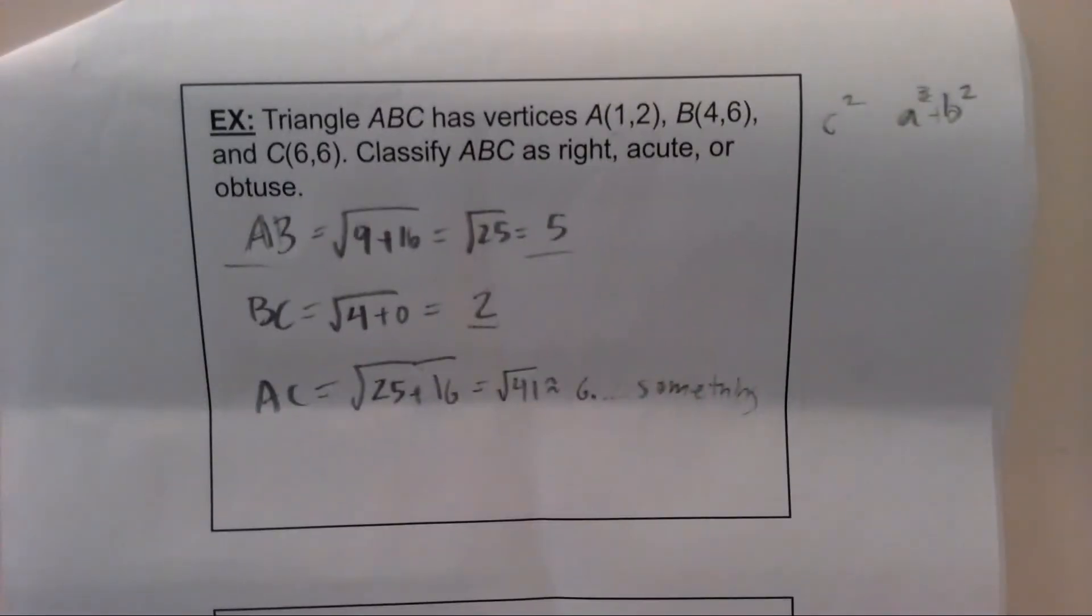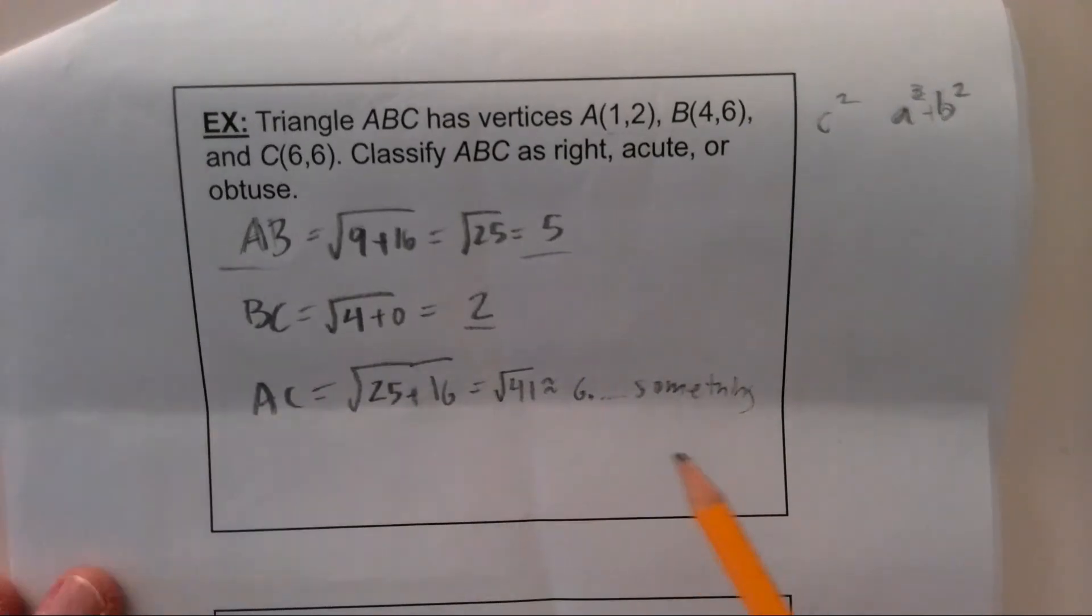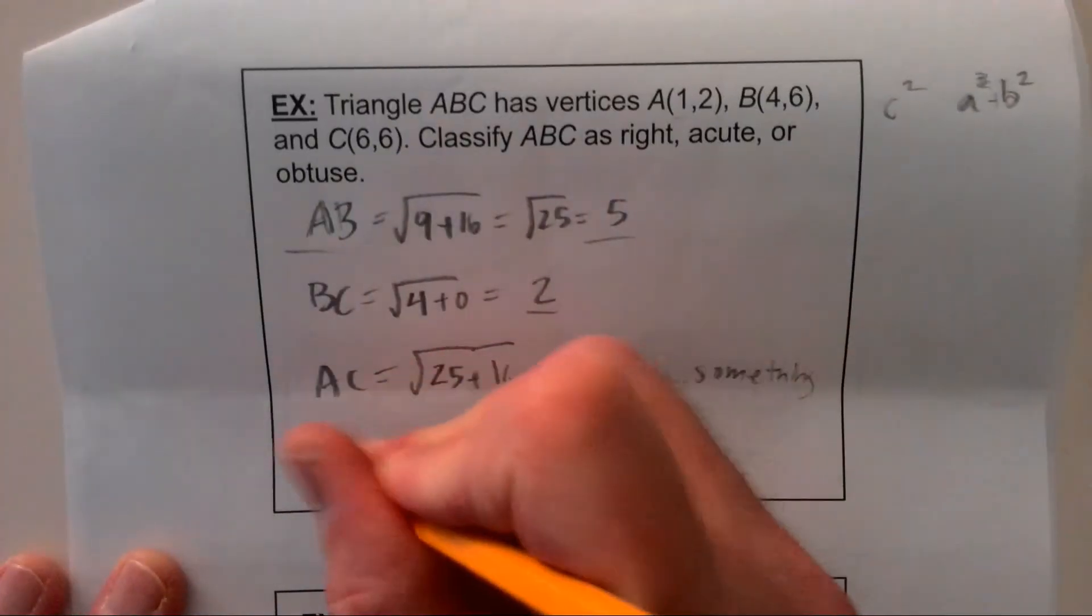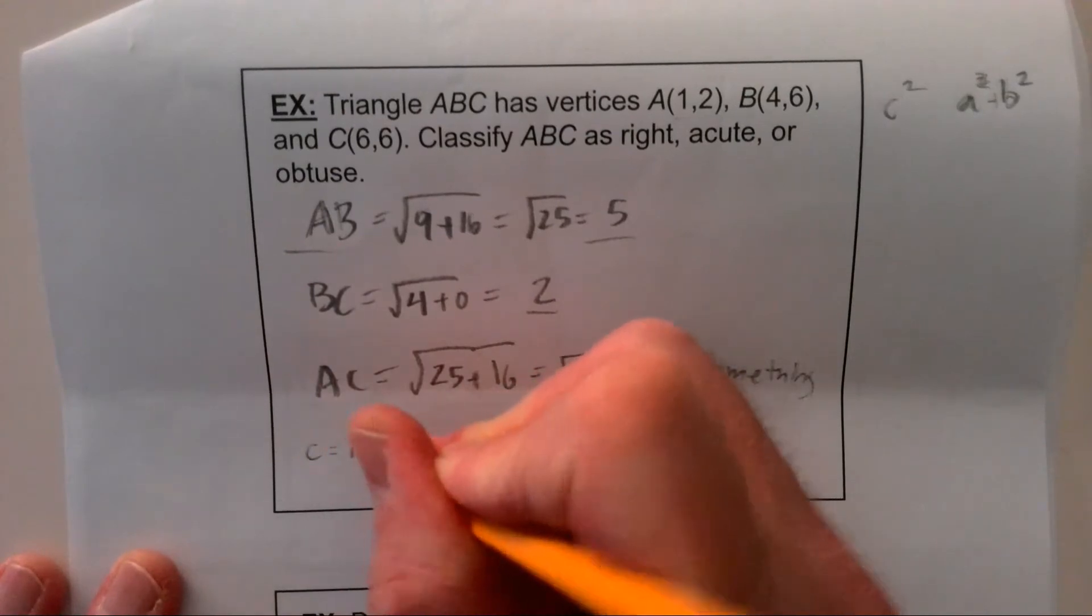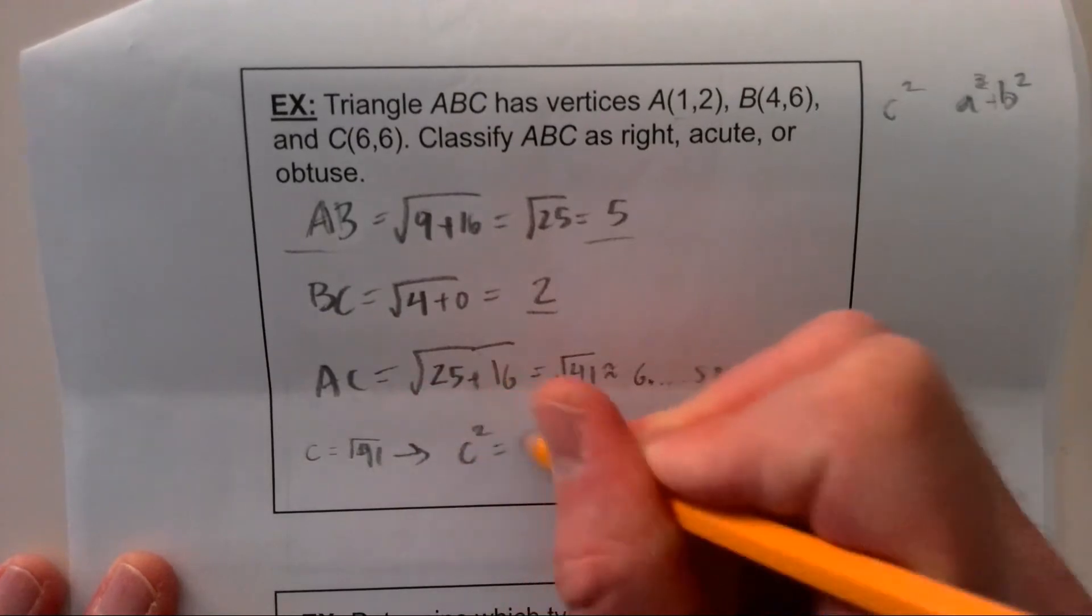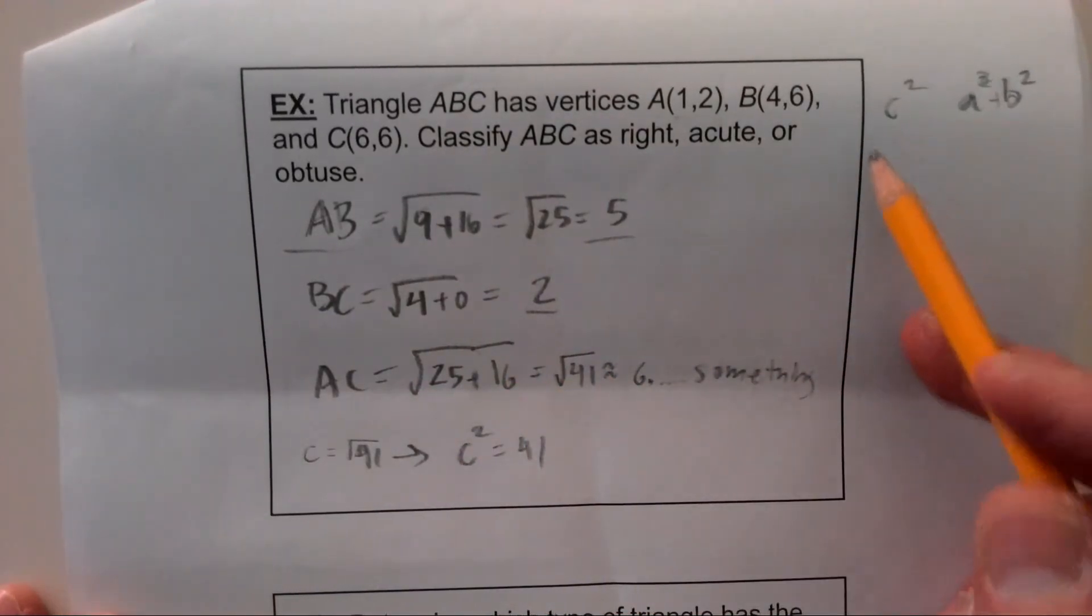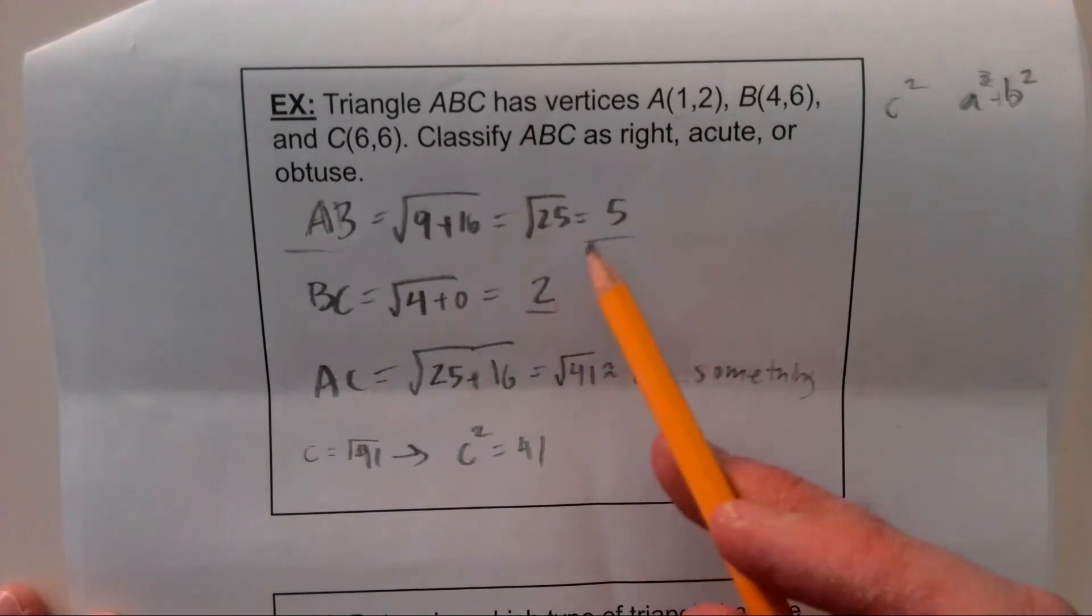So whenever we're making this comparison, we need to know what little c is. That's the longest side. Comparing these numbers, 5 to 2 to 6 point something, well this seems to be the longest side. So what I want to do is label little c as the square root of 41, which means that c squared is 41. So that would be my c squared. Now I want to compare that with a squared plus b squared.